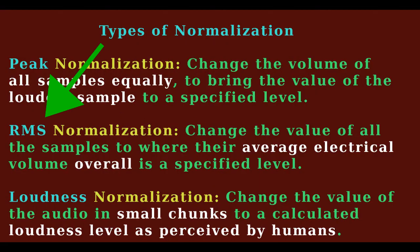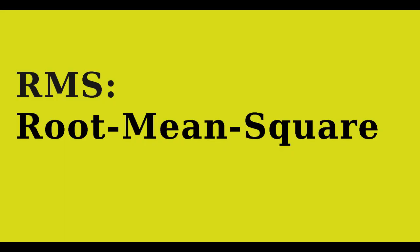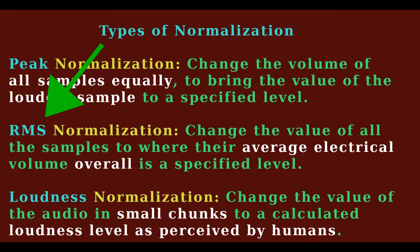RMS normalization changes the value of all the samples to where their average electrical volume overall is a specified level. The letters RMS stand for root-mean-square, and the methodology is very similar to the Pythagorean theorem in geometry. RMS is also measured in dBFS, but the value in this case is of the average electrical energy in the audio.